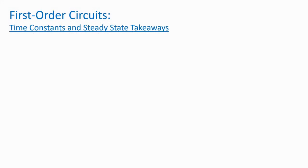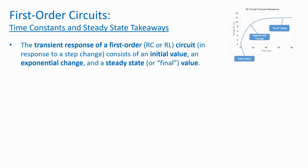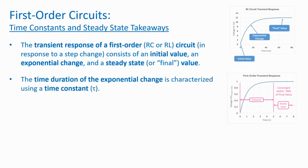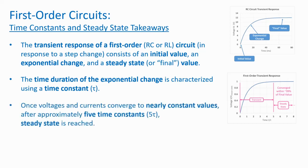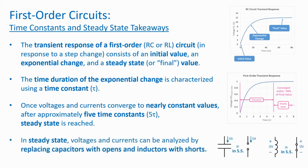Let's cover some takeaways from this talk. The transient response of a first-order circuit consists of an initial value, an exponential change, and a steady state or final value. The time duration of the exponential change is characterized using a time constant. The shorter the time constant, the faster the convergence to a final value. Once voltages and currents converge to nearly constant values after approximately five time constants, or five tau, steady state is reached. All voltages and currents in the circuit stop changing at the same time. In steady state, voltages and currents can be analyzed by replacing capacitors with opens and inductors with shorts.